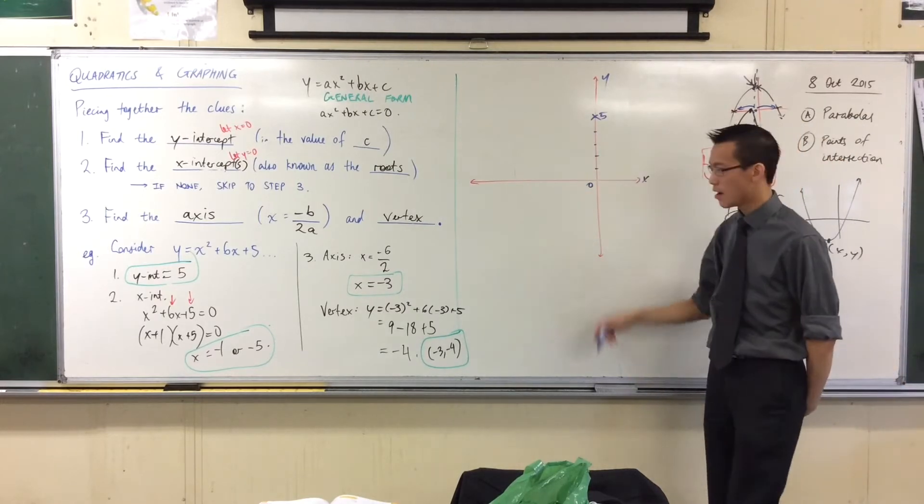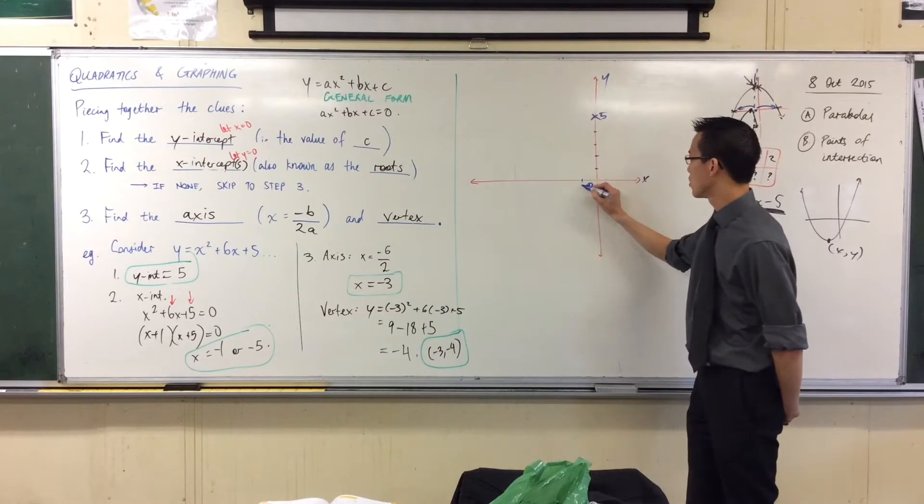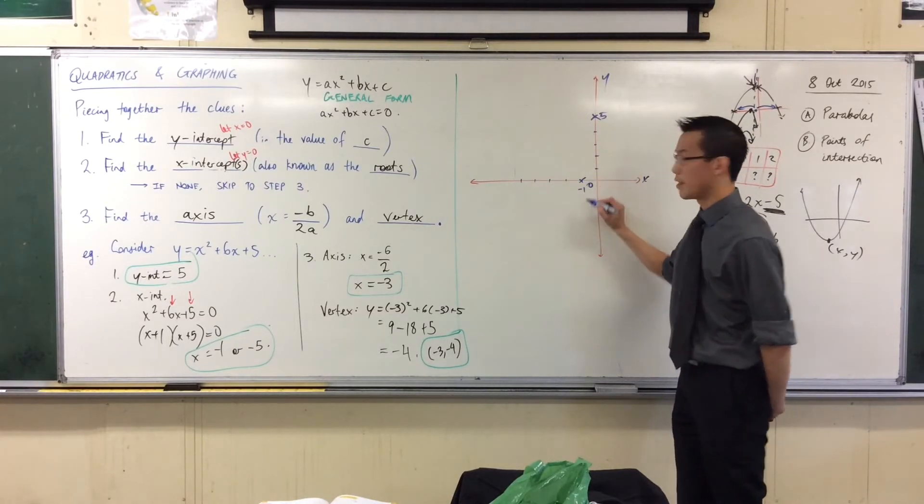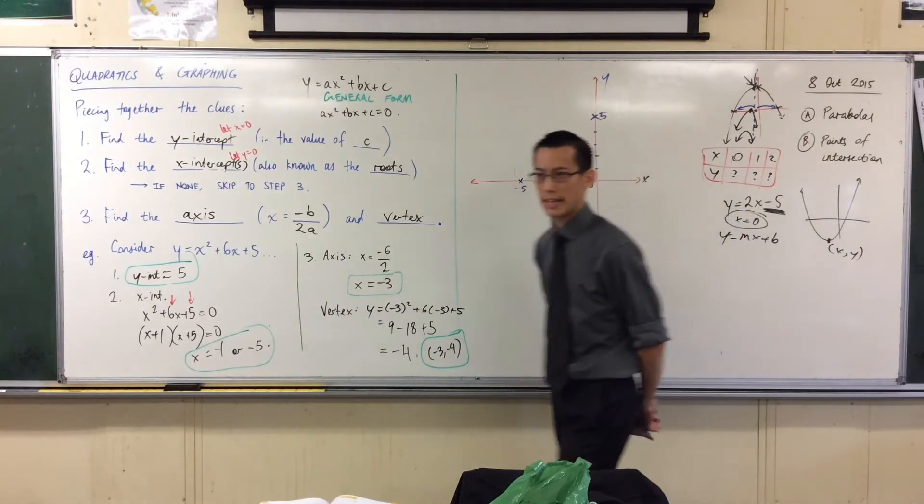I'm on my X axis now. I need negative 1 and negative 5. So I'm going to do this. 1, 2, 3, 4, 5. There's one there. Negative 1. And there's the other one over there. Negative 5.